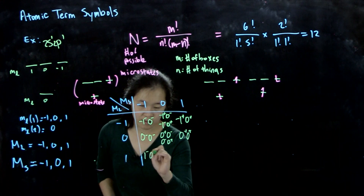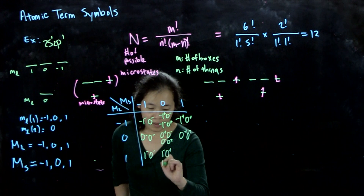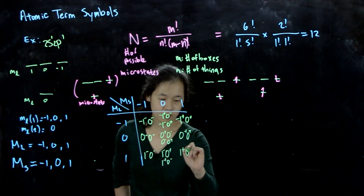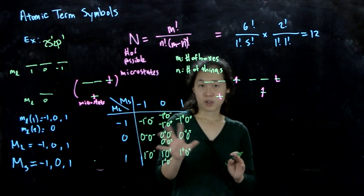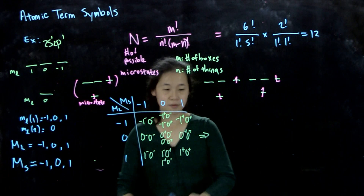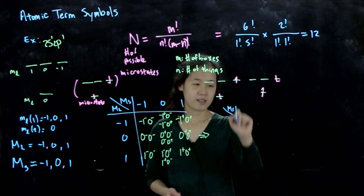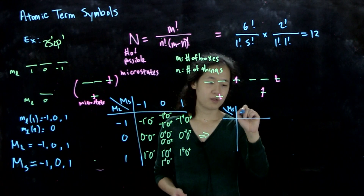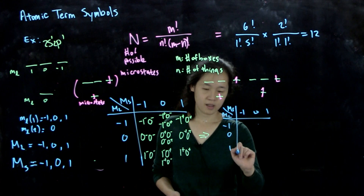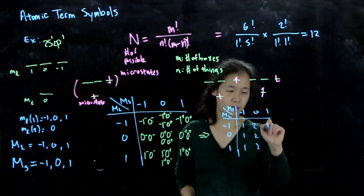For M_L = 1, M_S = minus 1: (1−, 0−) — 1 microstate. For M_L = 1, M_S = 0: (1−, 0+) or (1+, 0−) — 2 microstates. For M_L = 1, M_S = 1: (1+, 0+) — 1 microstate. Overall the table gives: M_S = minus 1, 0, 1 and M_L = minus 1, 0, 1 with counts 1, 2, 1 / 1, 2, 1 / 1, 2, 1.